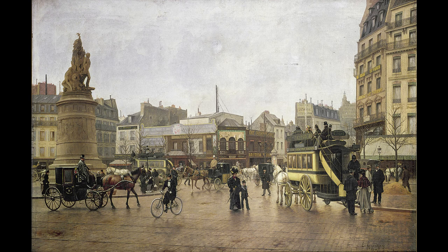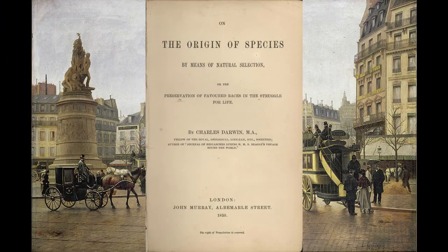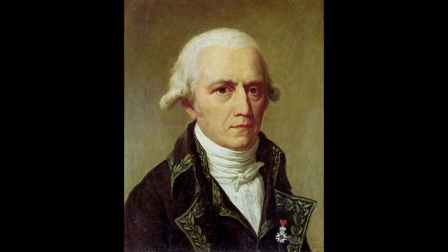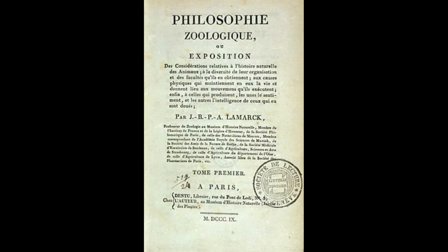En el siglo XIX, la antropología física queda definida como ciencia dedicada al estudio del ser humano a partir de su historia evolutiva, su variabilidad y diversidad biológica. Es en este siglo donde se crea la primera cátedra de antropología y en donde aparece una obra fundamental, el origen de las especies de Charles Darwin. Para ello mencionaremos a Jean-Baptiste Pierre-Antoine de Monet, Chevalier de la Marque, y su obra Filosofía zoológica de 1809,